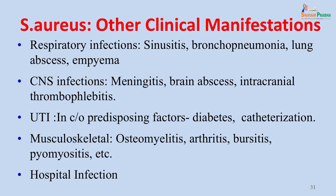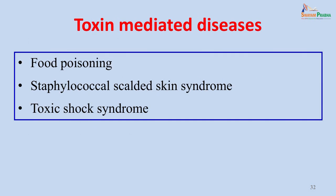Staphylococcus aureus, apart from subcutaneous infections such as the carbuncle in this case, can have various other clinical manifestations. It can cause respiratory infections such as sinusitis, bronchopneumonia, lung abscesses and empyema. It can present with CNS infections such as meningitis, brain abscesses and intracranial infections. Urinary tract infections may occur in patients with predisposing factors such as diabetes or catheterization. Musculoskeletal infections can include osteomyelitis, arthritis and bursitis. It is also a very common cause of hospital infections, specifically in burns units and surgical wards. The toxin-mediated diseases include food poisoning, scalded skin syndrome and toxic shock syndrome.